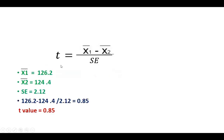Now apply the t-test formula: t = (x̄₁ - x̄₂) / SE = (126.2 - 124.4) / 2.12 = 1.8 / 2.12. The calculated t-value is 0.85.